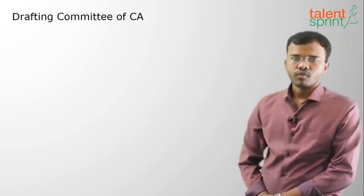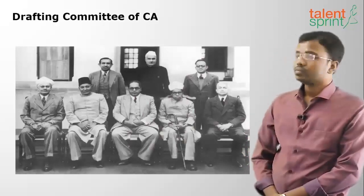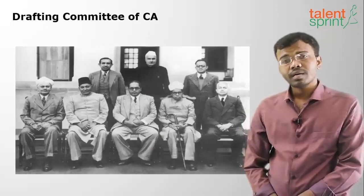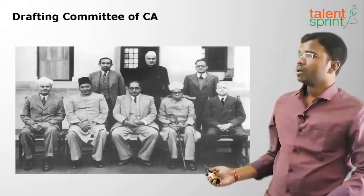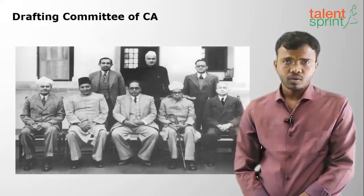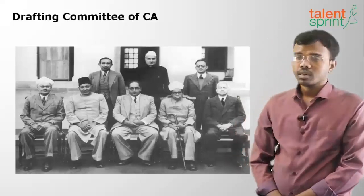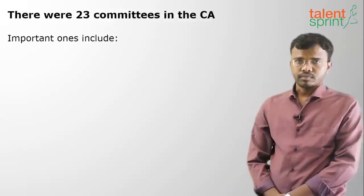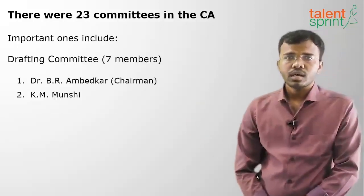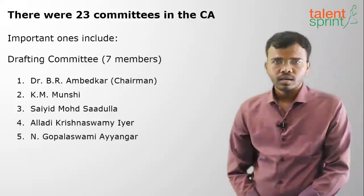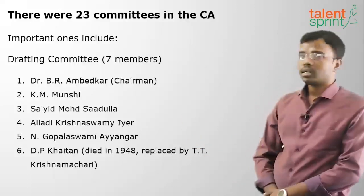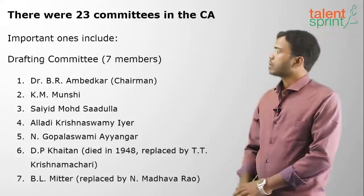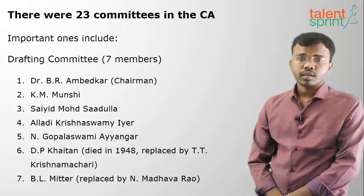The drafting committee of the Constituent Assembly had seven members and its chairman was Dr. Bhimrao Ambedkar. Its members included K.M. Munshi, Syed Mohammad Saadulla, Gopalswami Iyengar, Alladi Krishnaswami Iyer, D.P. Khaitan (who later died and was replaced by T.T. Krishnamachari), and B.L. Mitter (replaced by N. Madhava Rao). The drafting committee's work was to write the new Constitution for the coming independent India.